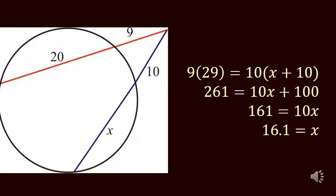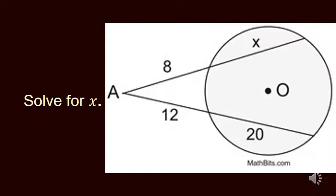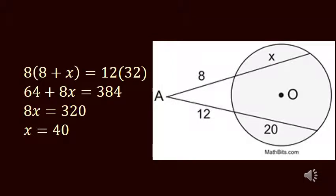So take a second and see if you can figure out this answer. And the numbers involved get kind of big, but it is just 8 times 8 plus x equals 12 times the whole thing. 12 plus 20 gives you 32. And again, you distribute everything out, you solve it, and it turns out this time x has to be 40.